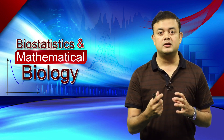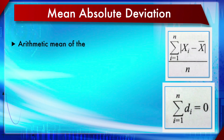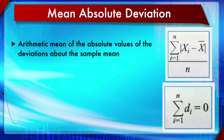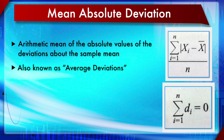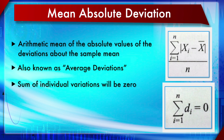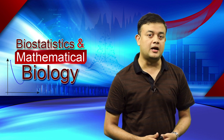Next is mean absolute deviation, which is quite similar to MAD. Whereas MAD involves two median calculations — one at the first step and one at the final step — mean absolute deviation involves two mean calculations instead, and the subtraction is with the mean rather than the median. Mean absolute deviation is the arithmetic mean of the absolute values of the deviations about the sample mean, and is also called the average deviation. The sum of individual deviations about the mean is always exactly zero.